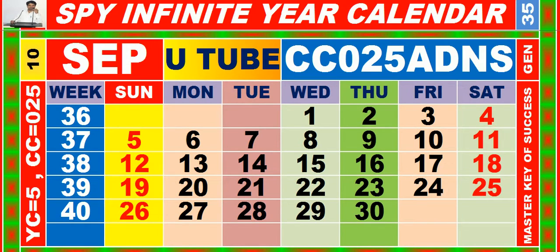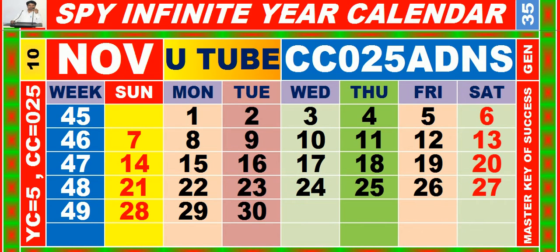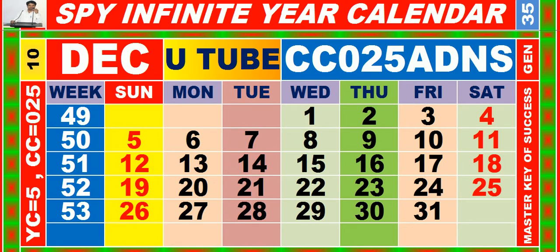Calendar for the month of November, having calendar code equal to 025. Calendar for the month of December, having calendar code equal to 025.